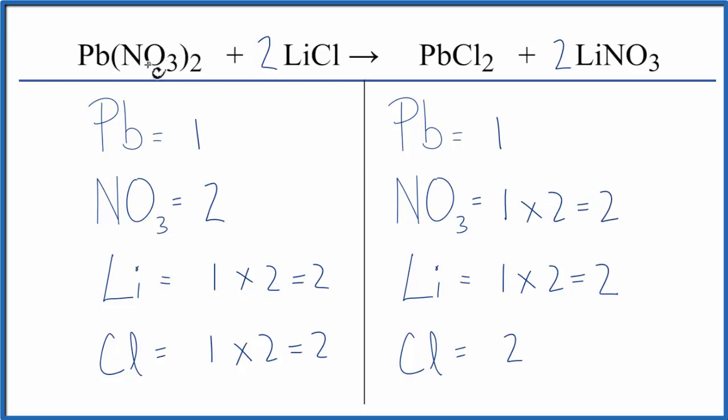So when we count this nitrate, this polyatomic ion, it's just 1 item because it appears here, and we see another nitrate here. It makes the balancing a little bit easier, and you're less likely to make mistakes.